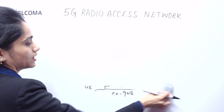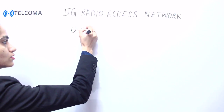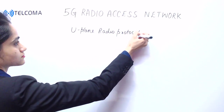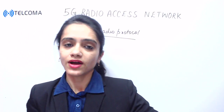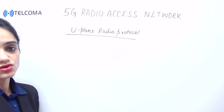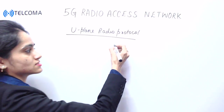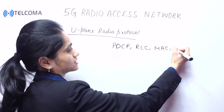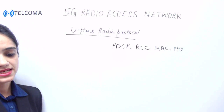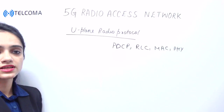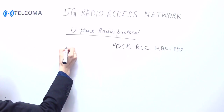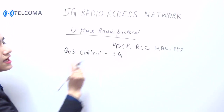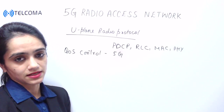For this we require the user plane radio protocol. The LTE user plane protocol stack consists of PDCP, RLC, MAC, and the physical layer. The main extension in the 5G core network is that it enables quality of service (QoS) control. This QoS control is present in 5G, whereas in LTE we have EPS bearer services.